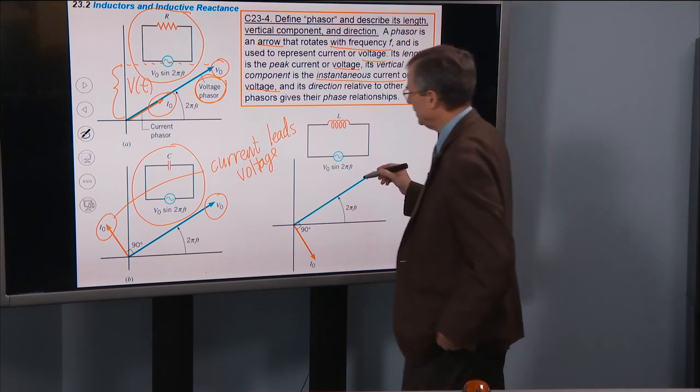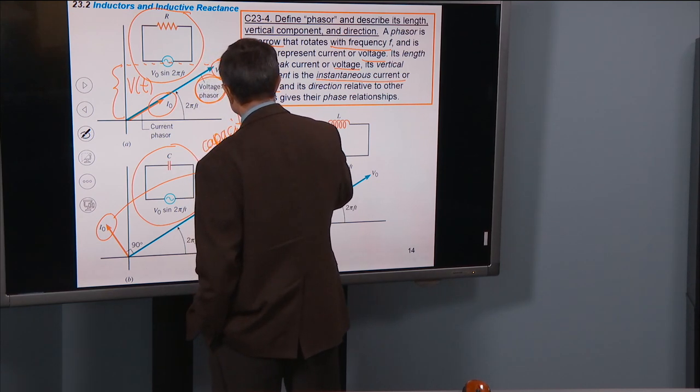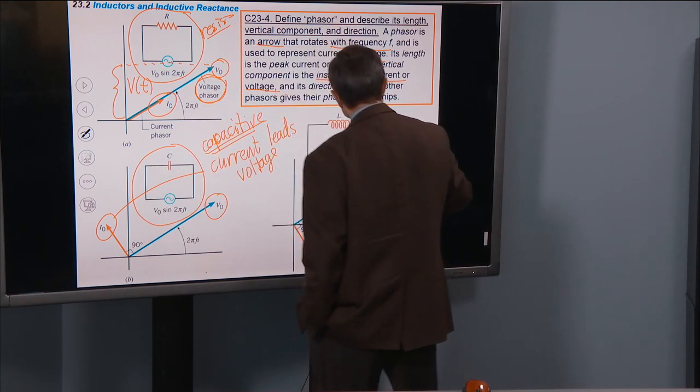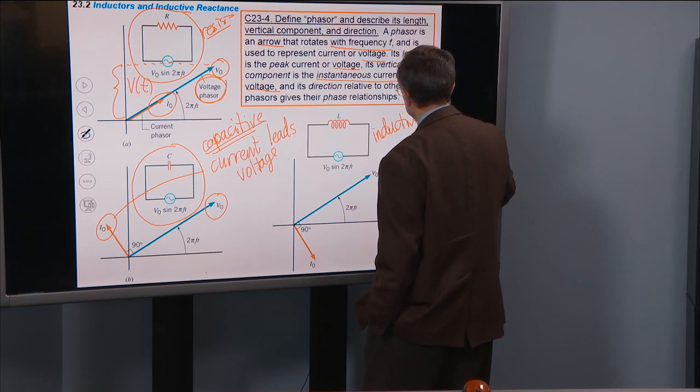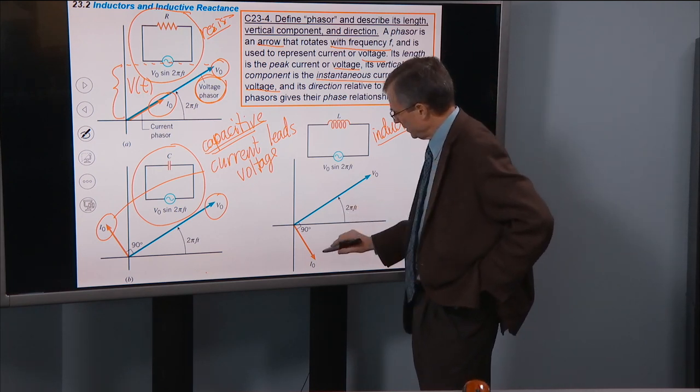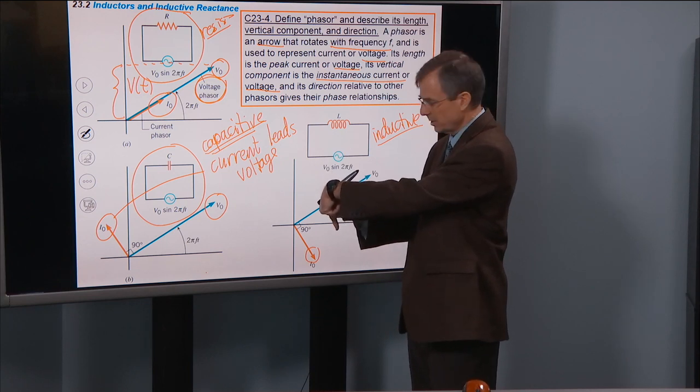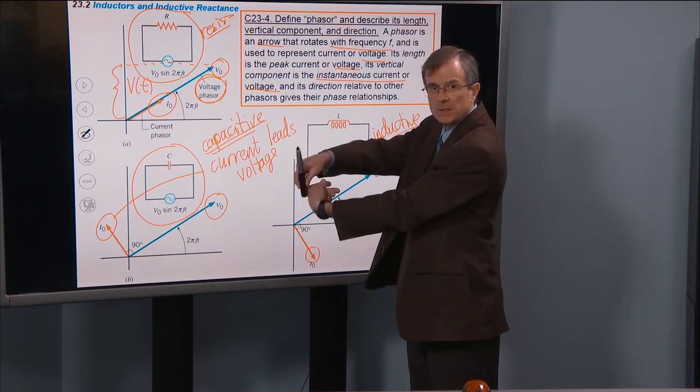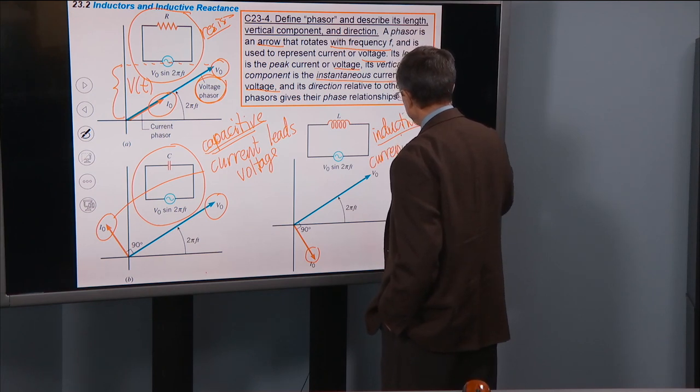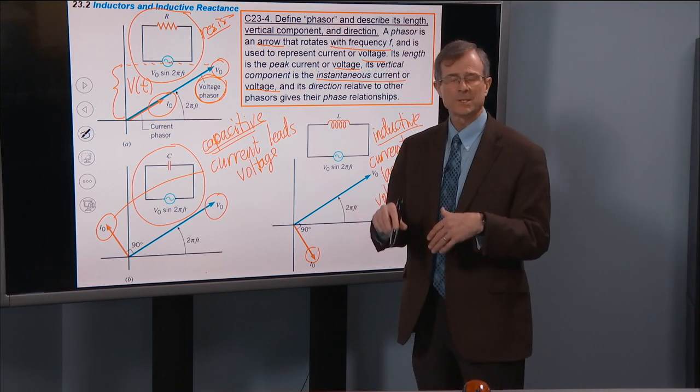And then what about a purely inductive, so this is purely capacitive circuit, this is resistive, and then this is purely inductive. Well in that case, as you remember, the current lags behind the voltage. So if this pen here is a voltage and my finger is the current, the voltage is ahead. It's always ahead as they move around the circle. So the current lags the voltage. What do you mean by lags? I mean it's just behind the voltage.